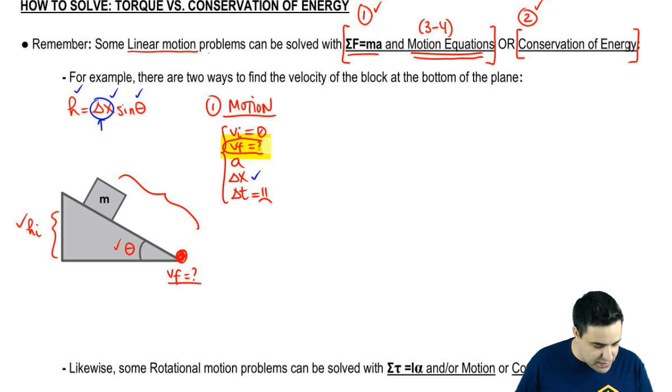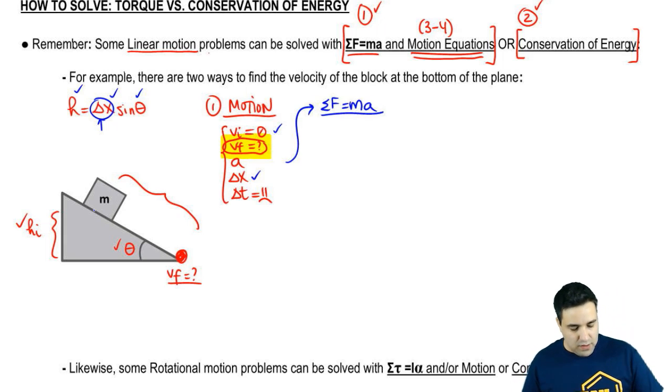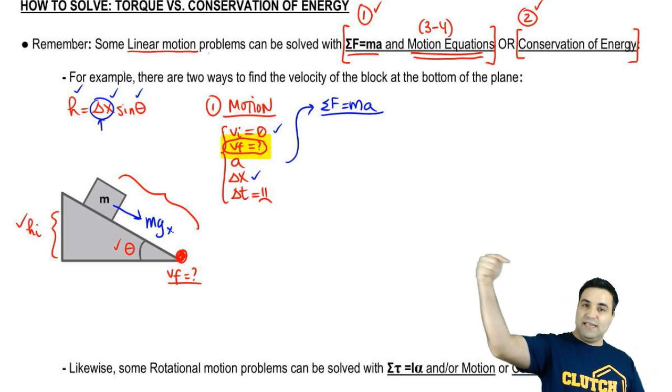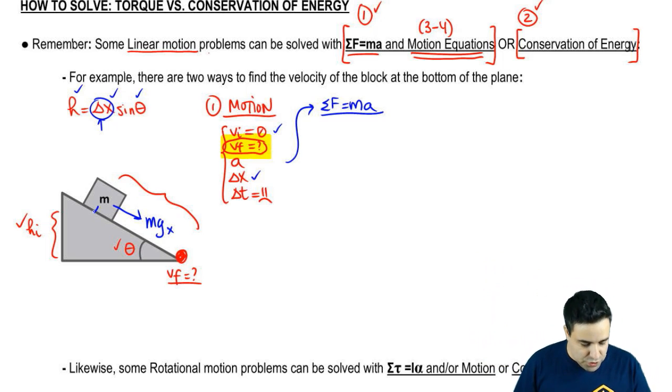But notice that to solve this, you need to know two things. So you would know v initial, you could find delta x, you would be missing acceleration. So what you would do to find acceleration is you would write sum of all forces equals ma. And in this case, the only force that matters here is mgx. You have mgx pulling this thing down the plane.